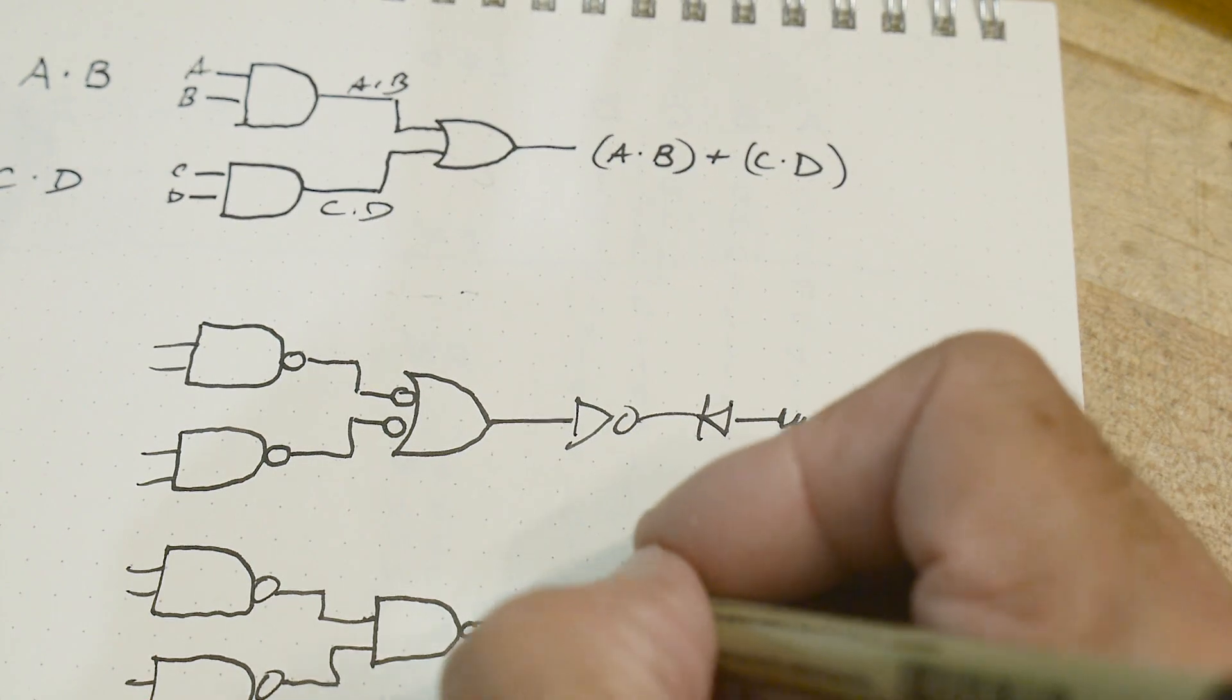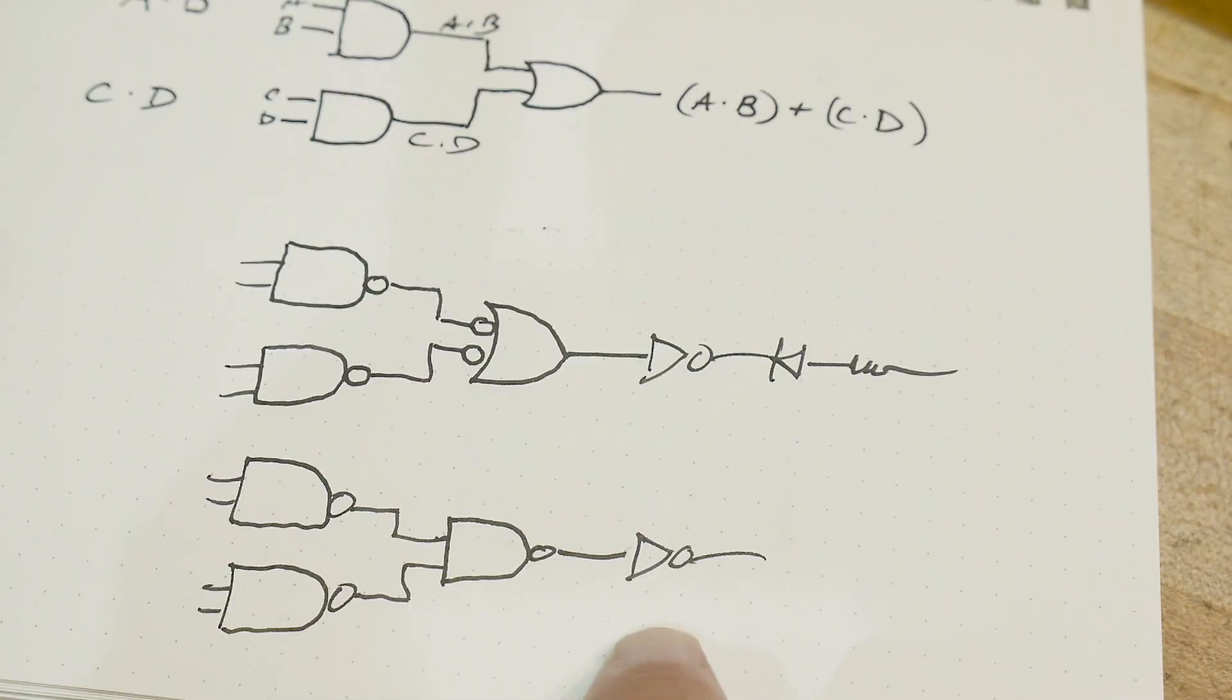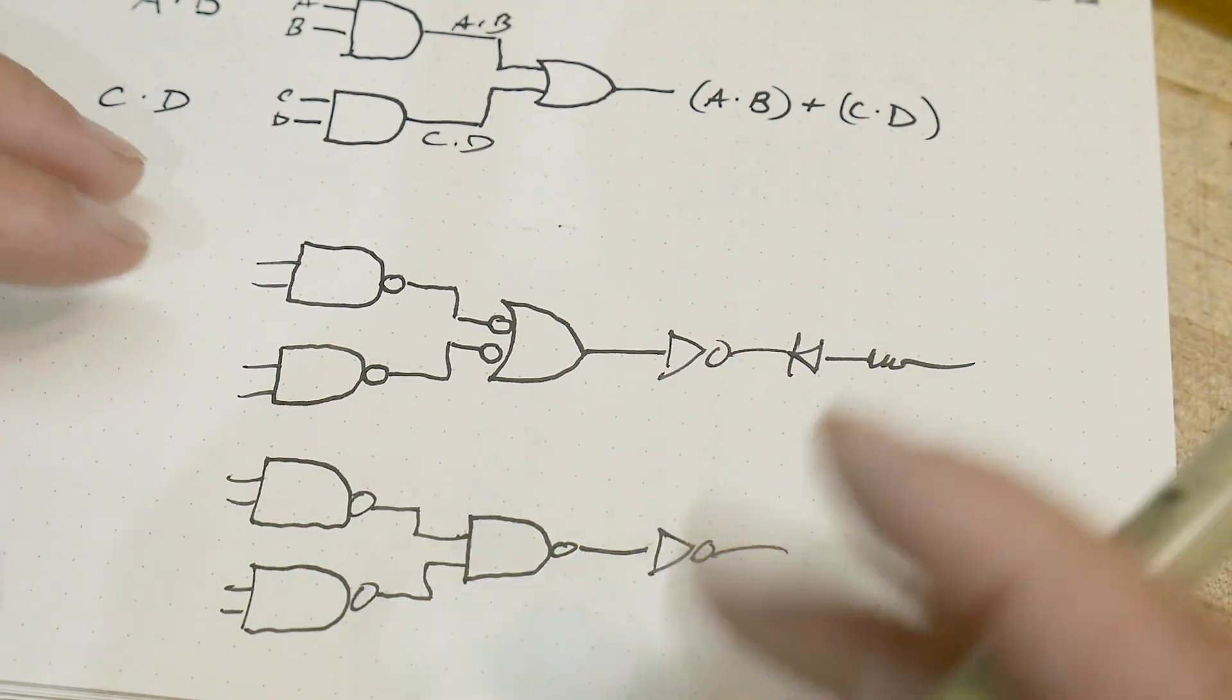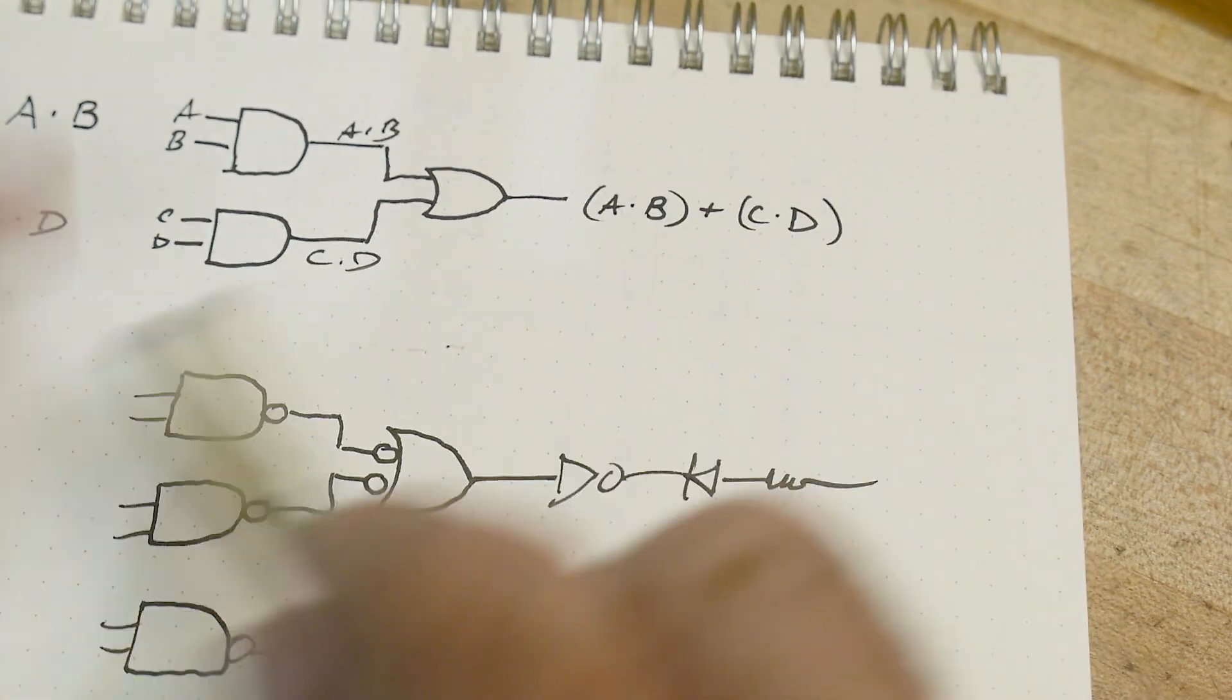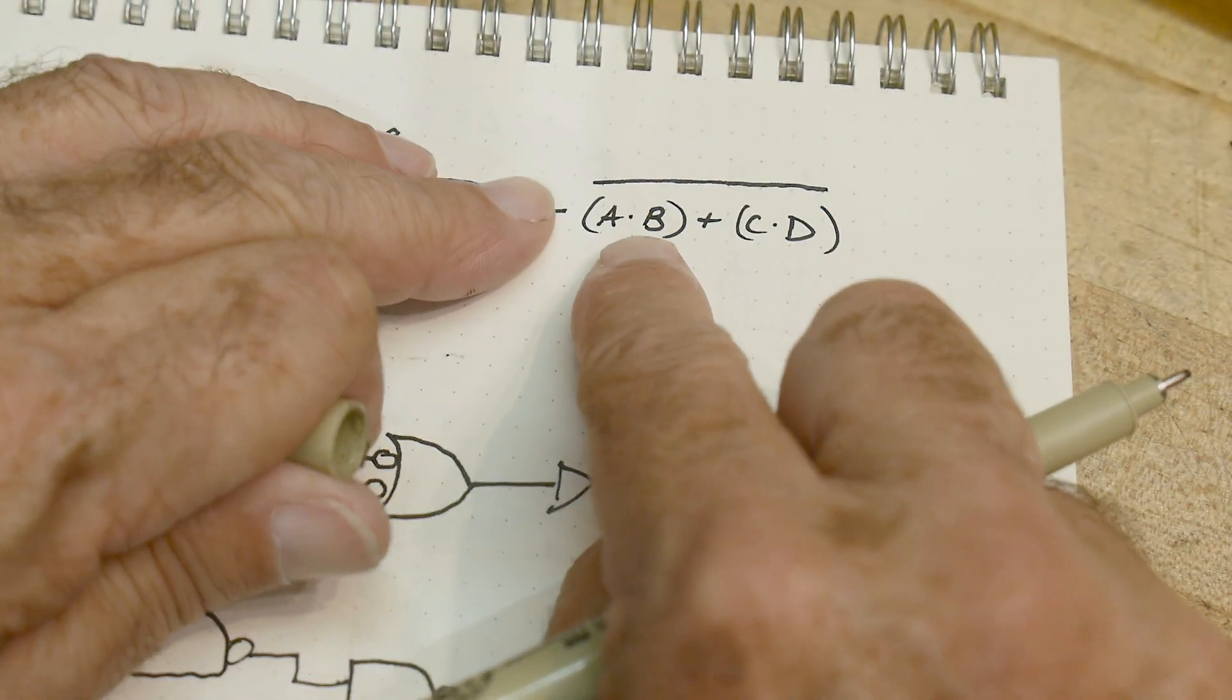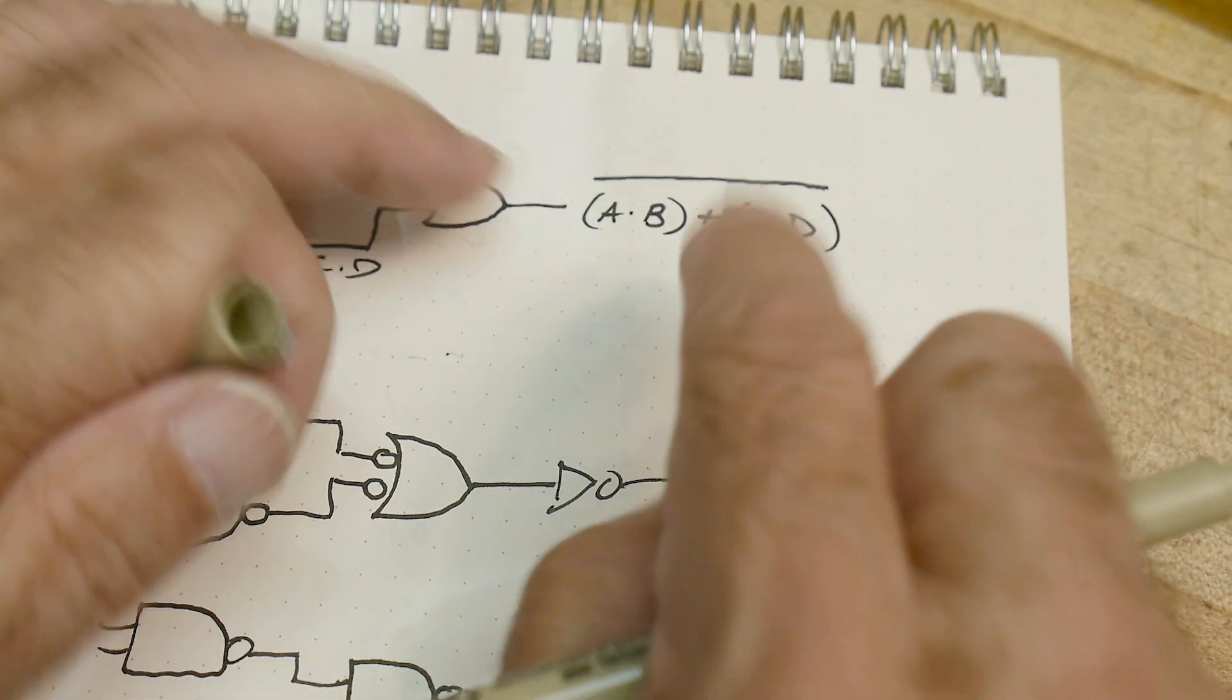You would have had to have an inverter gate on each one of these. And then that would have screwed up your algebra and everything too. So you didn't think far enough ahead. You needed, really, this is what you needed. You needed A and B or C and D NOT. This is what you really needed.